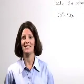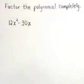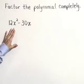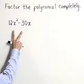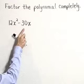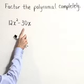Factor the polynomial completely. Here we have the polynomial 12x squared minus 30x. The first thing that we try to do when factoring a polynomial is determine if there is a greatest common factor.